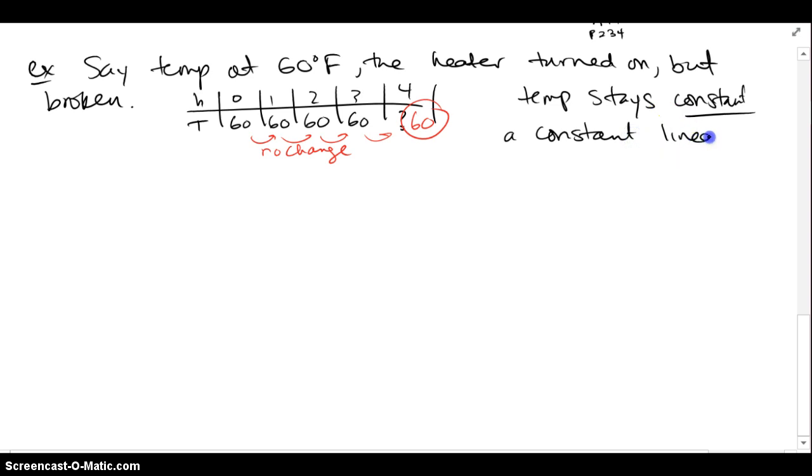So if the temperature stays constant, meaning it doesn't change, this is a constant linear function. And a constant linear function basically has no a, or a is equal to 0. That means I have f of x equals just b, no change, no rate of change a, and in this case, I will have T equals 60 degrees at all times.